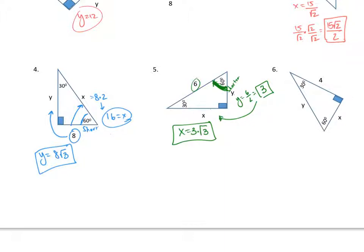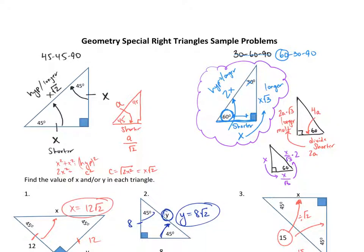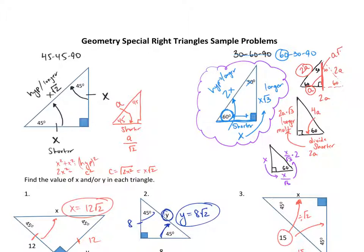Why does this pattern work? Suppose we have a 60-30-90 triangle and we extend it into an equilateral triangle, making all angles 60 degrees. If we call the full base 2a, then each side is 2a. The halfway point gives us a, and using the Pythagorean theorem on the two halves gives the remaining side as a times root 3. That's how we prove that pattern.